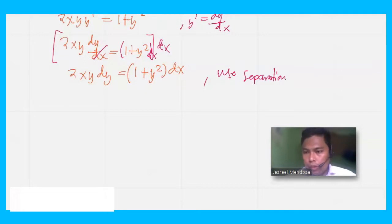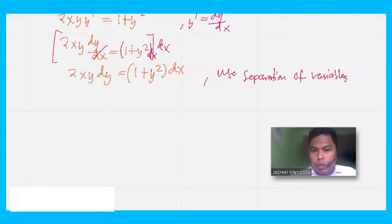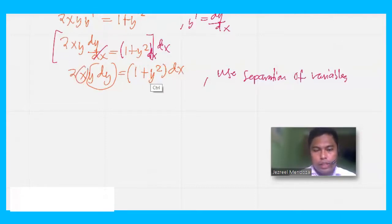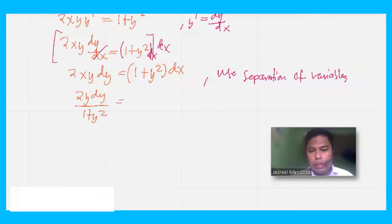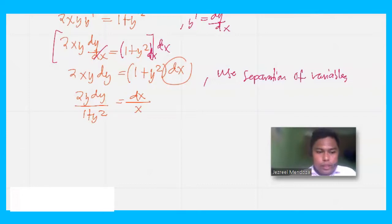To separate the variables, we move all y terms to one side and x terms to the other. This gives us 2y·dy / (1 + y²) = dx / x. After separating the variables, we integrate both sides.